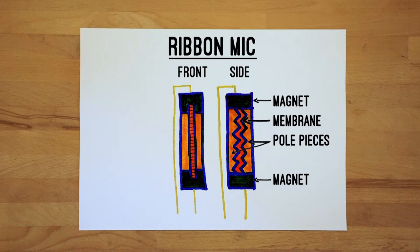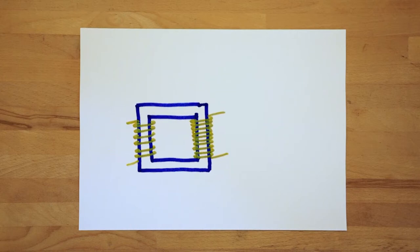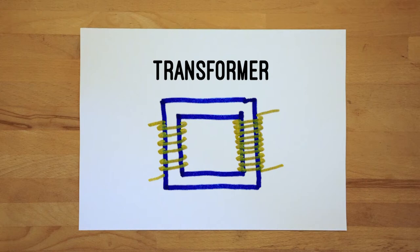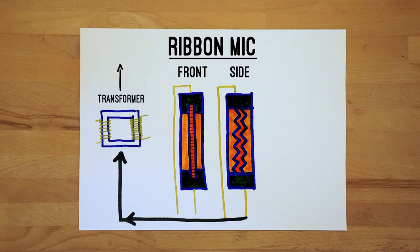This current is so small that it is too low to just be sent on to a preamp. Therefore, it is first sent to a transformer — nothing more than two coils with different amounts of winds in close proximity of one another. The ratio in ribbon mics is usually between 1 to 20 and 1 to 40, which means that one volt is turned into 20 or 40 volts. In addition to this transformation, you still need a preamp to boost the resulting signal up to the right level.